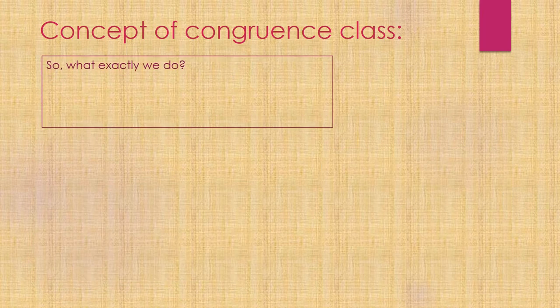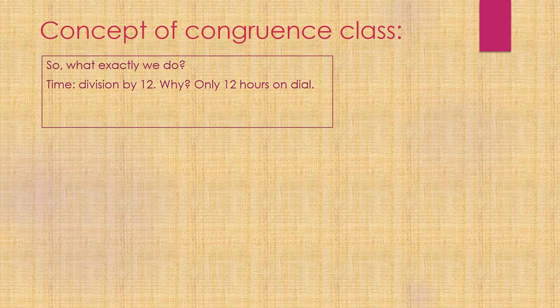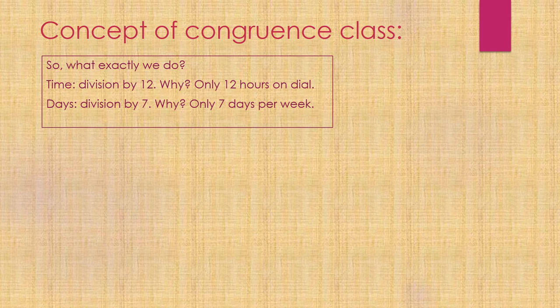So what exactly did we do? In case of time, we divided by 12 and added the remainder to the earlier time, because we can see only 12 hours on a clock dial. Similarly, for days calculation, we divided by 7 and added the remainder because we have only 7 days per week. The same thing can be used for months, dividing by 12.